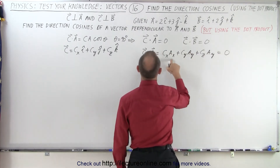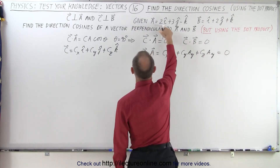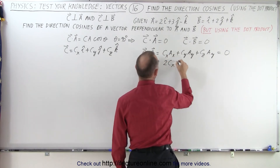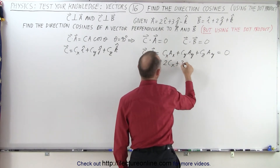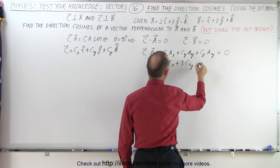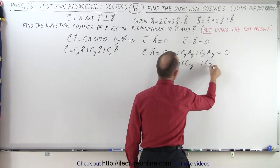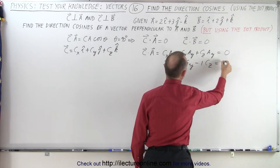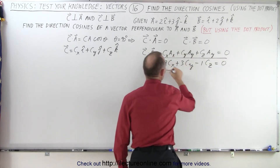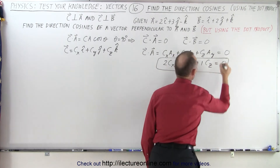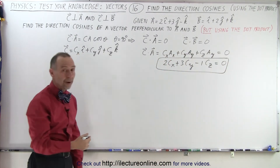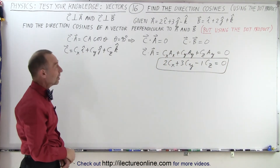In other words, A sub X is 2, so 2 times C sub X plus 3 times C sub Y minus 1 times C sub Z must equal zero. And so we have one equation here with three unknowns: C sub X, C sub Y, and C sub Z.